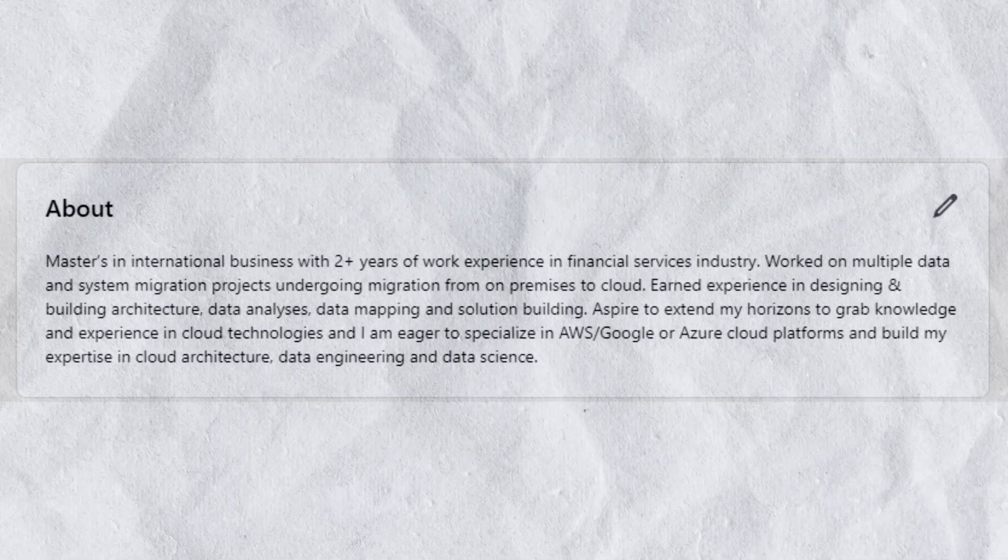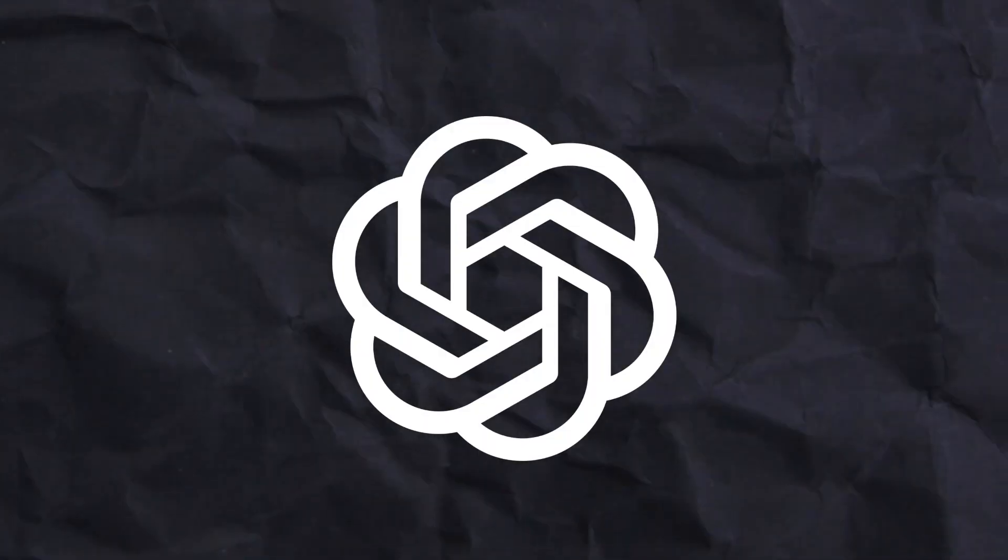Once we are done filling up the profile section, the next one is the About section. This is the most important section in your entire LinkedIn profile. Whenever someone interested in your profile visits it, they will definitely read the About section because it is a summary of your entire LinkedIn profile. We have to make sure that we are optimizing the About section to include all the keywords that recruiters are searching for on LinkedIn — and this is where we are going to use ChatGPT and other AI tools.